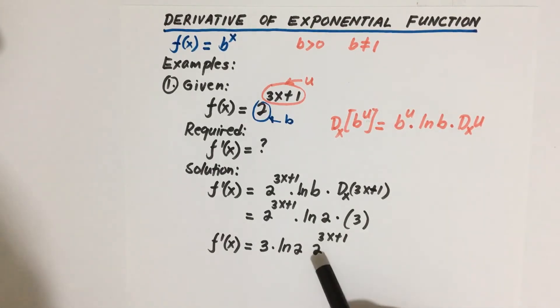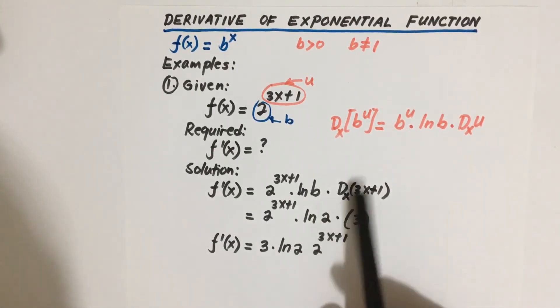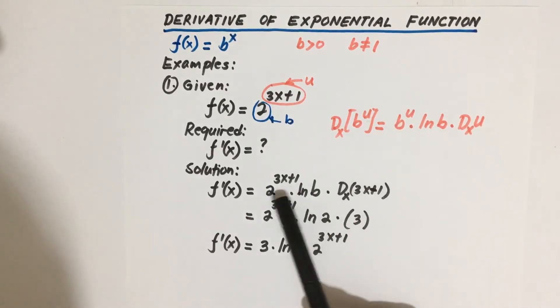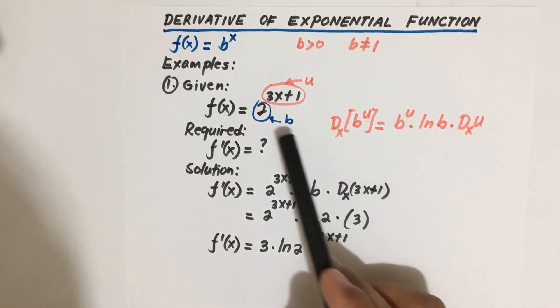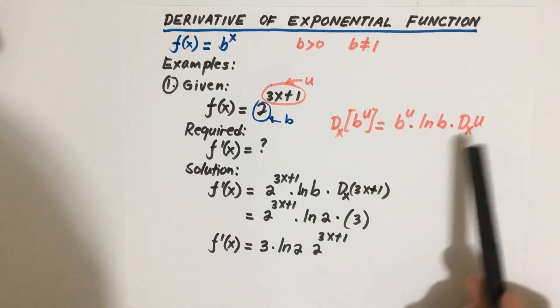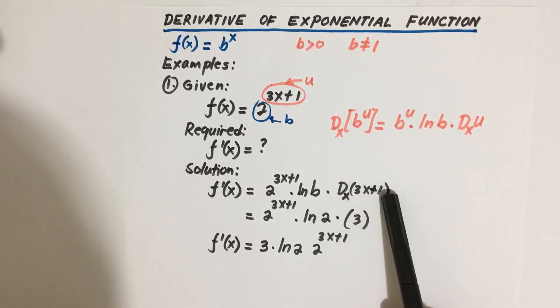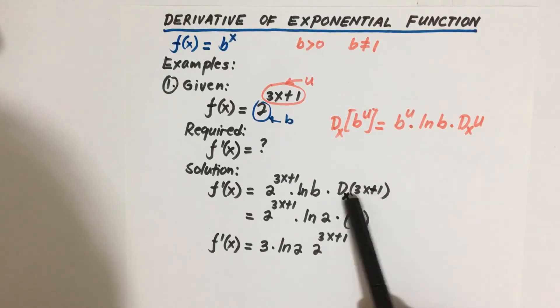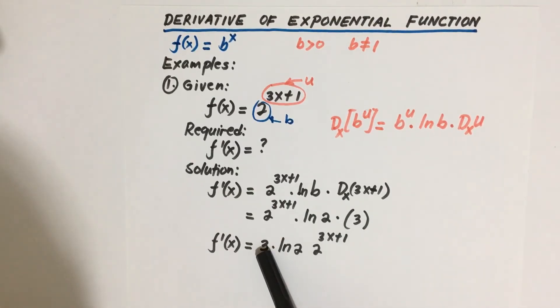Let us check our work. So we have this formula b to the u times ln b where b is equal to 2. So ln 2 times derivative of u with respect to x. U is this one, the quantity 3x plus 1. So derivative of these terms here is equal to 3, then writing 3 first multiplied by ln 2 and multiplied by 2 to the 3x plus 1.